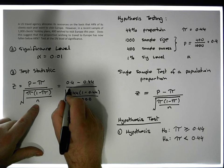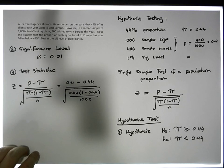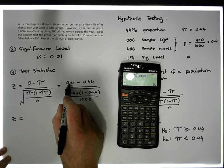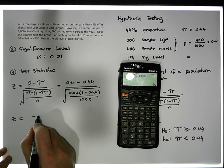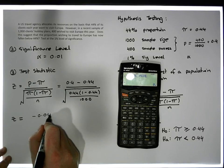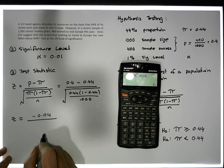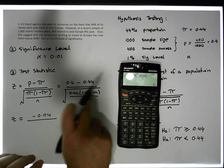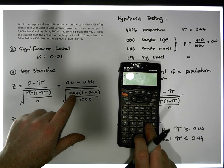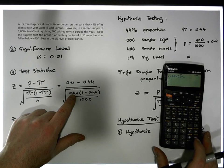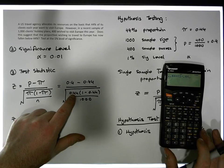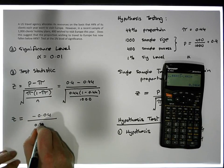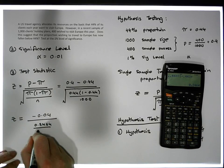Working through in stages: the numerator is 0.4 minus 0.44, which gives minus 0.04 — so this test statistic will be negative. For the denominator, 0.44 times one minus 0.44 gives 0.2464, which must be divided by 1000.